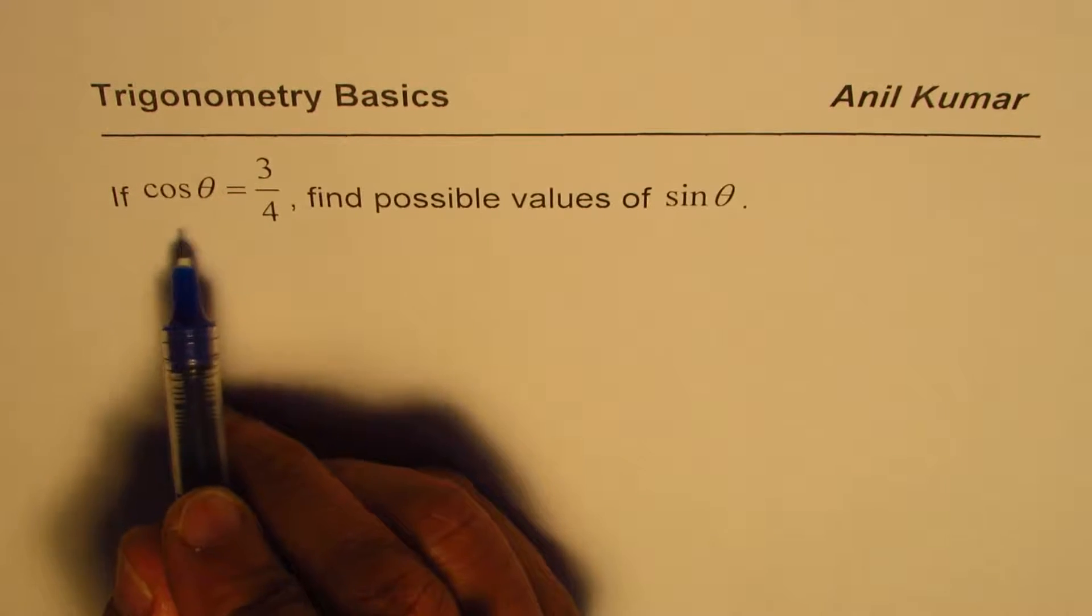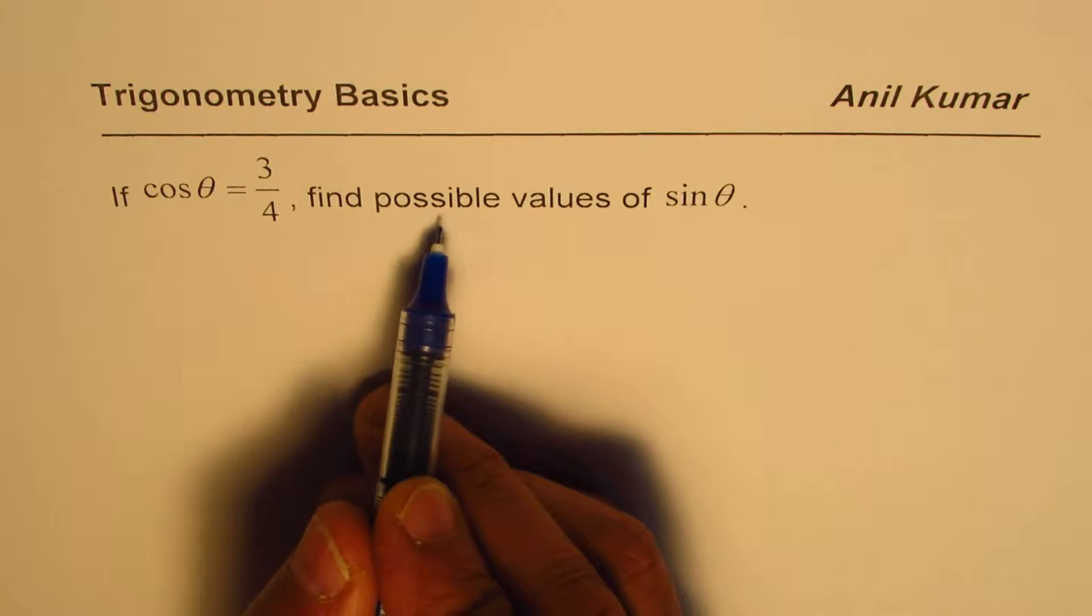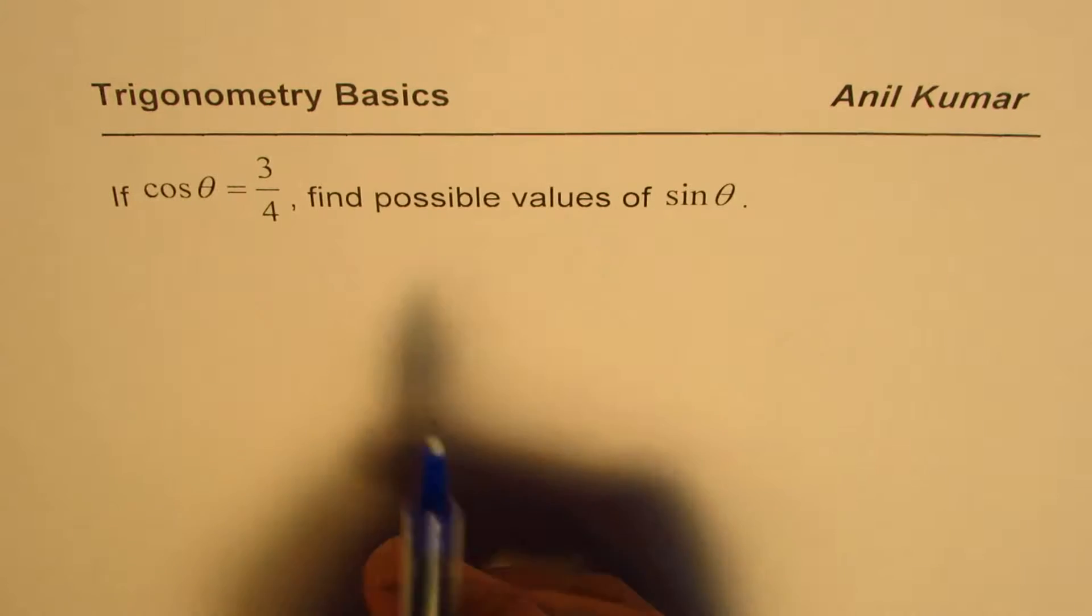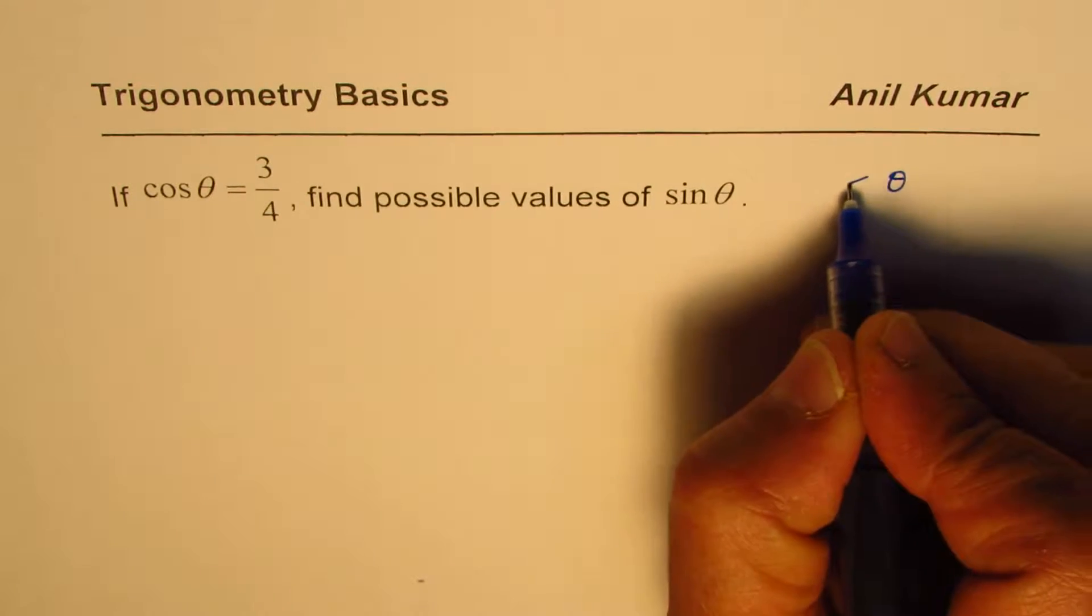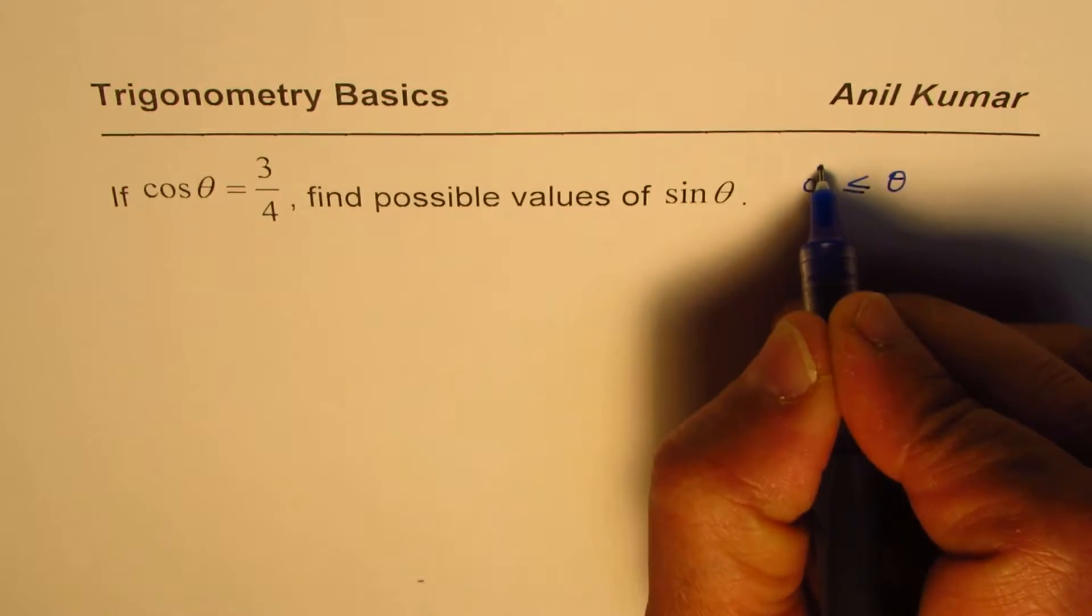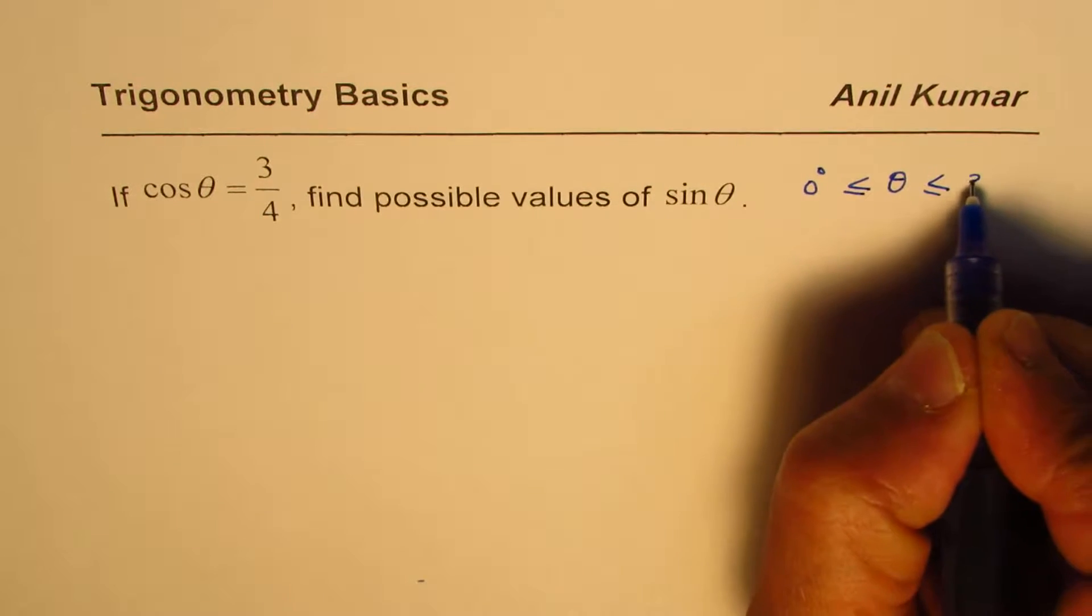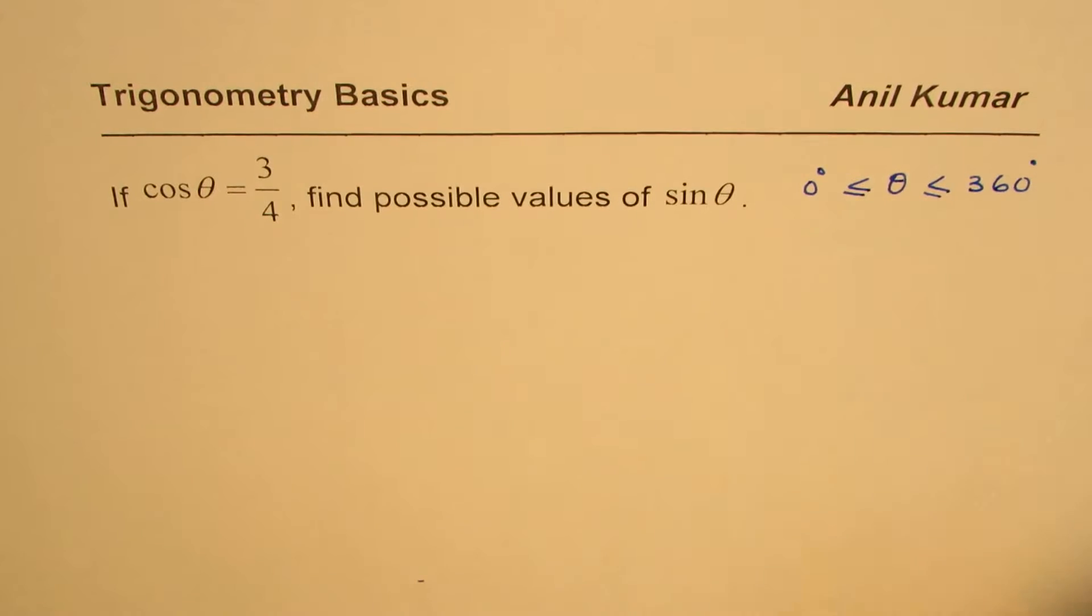If cos theta is 3 over 4, find possible values of sine theta. In this particular example we will consider theta to be an angle between 0 degrees and 360 degrees. So that is what we are going to assume since it is not specified.